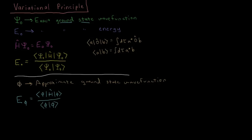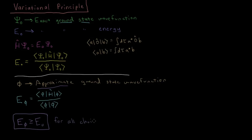This phi is not necessarily going to be an exact eigenfunction of the Hamiltonian. But the variational principle very simply states that the energy of any trial wave function — any approximate wave function E(phi) — is going to be greater than or equal to the ground state energy. This is true for all choices of phi. Any wave function we pick which is not the true exact ground state will give us a higher energy than the true wave function.